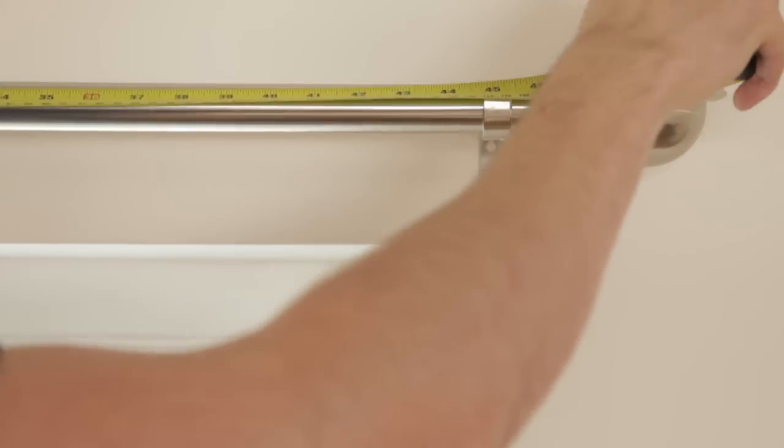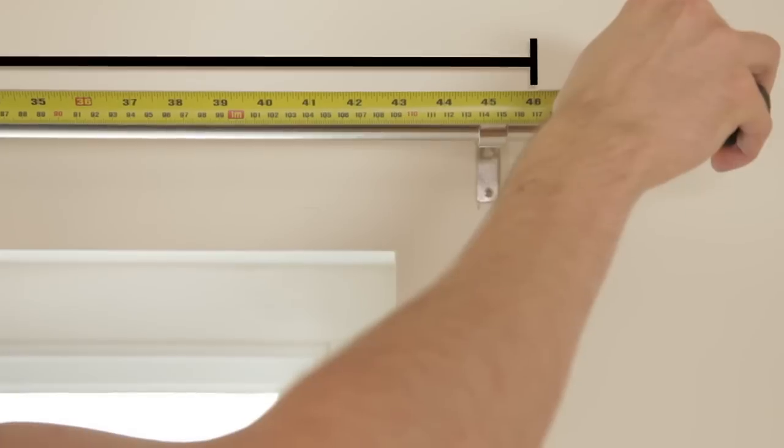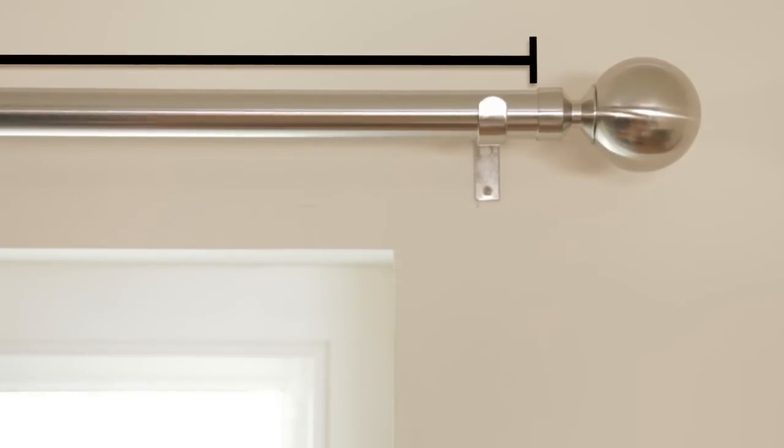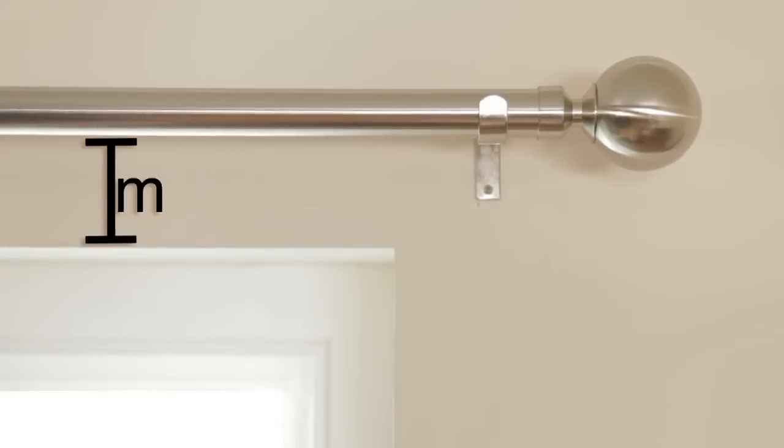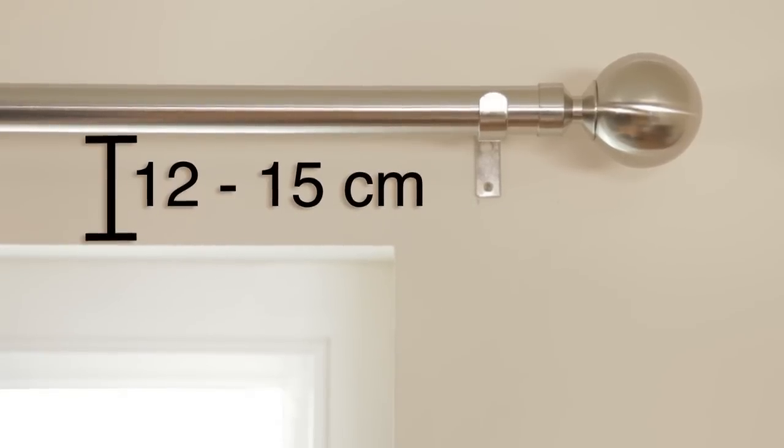Record the width of the pole between the finials, the decorative ends. It should be at least 15 centimeters past the end of the window recess. It should also be between 12 and 15 centimeters above the recess, which will stop any light showing through at the top of your new curtains.